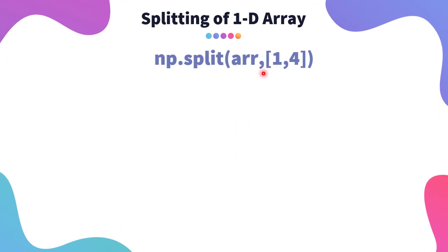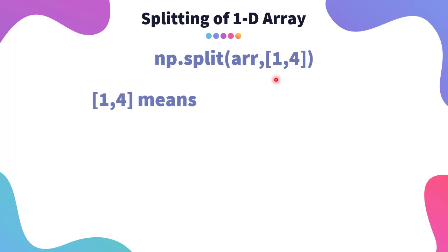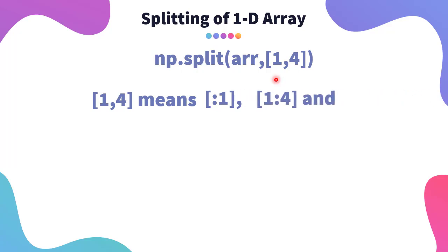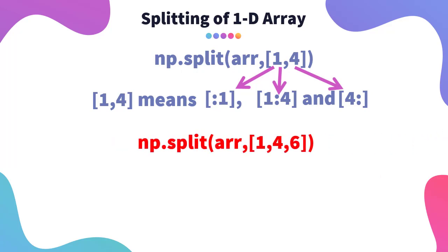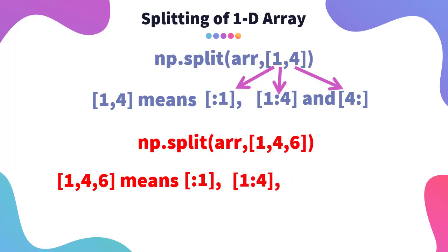You can also split an array using an index argument. For example, 1, 4 means: first split using index colon 1, then another split using index 1 colon 4, and the last one is 4 colon. If we split using 1, 4, 6, that means colon 1, then 1 colon 4, then 4 colon 6, and then 6 colon.